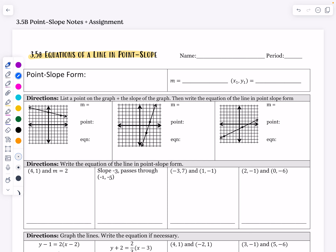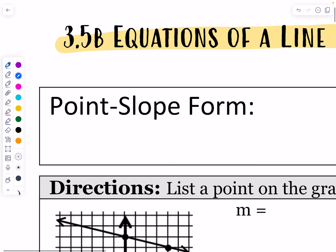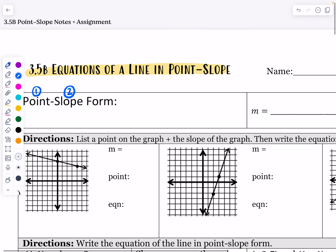Point-slope form is going to give you two things: a point on the line — any point on the line — and then the slope of that line. Because what does it take to create a line? It takes a point, and then from there, to get that second point, you just need a slope.